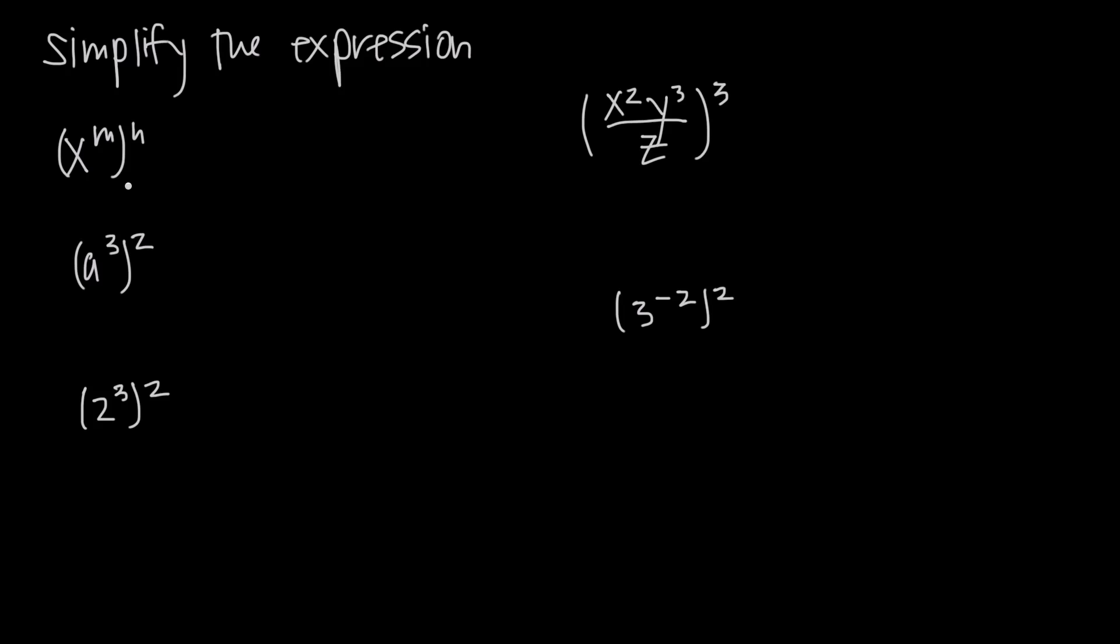In this video, we're talking about the power rule for exponents, which tells us that when we have some base—whatever it is, it could be a variable, an unknown, or a whole number—and we have that raised to an exponent, when we raise it to an exponent again, all we're going to do is multiply the exponents together. So this is equal to x to the m times n, or just x to the mn.